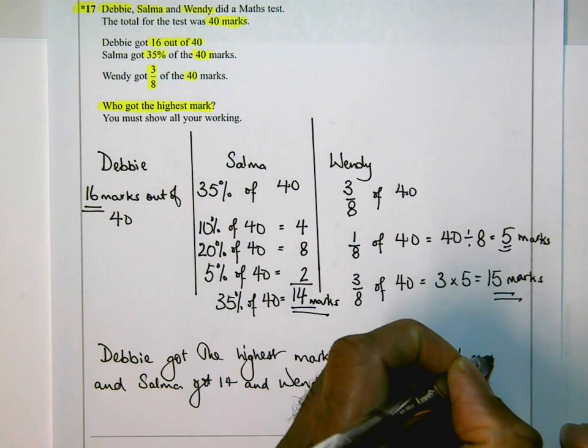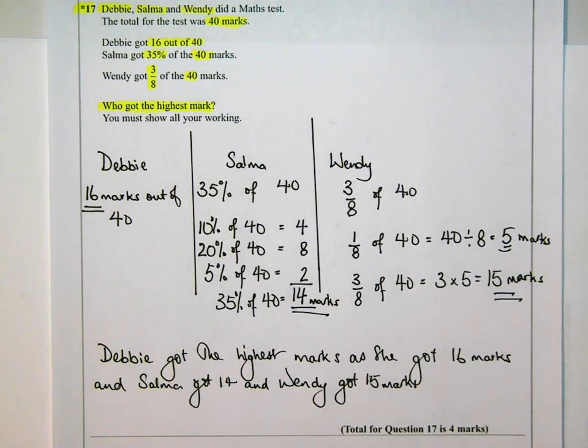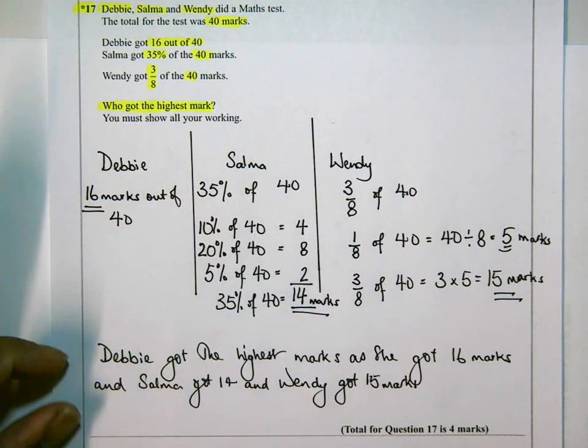There are other ways you could have written this. You could have written, 'Debbie got the highest marks as she got more than Salma and Wendy.' But however you do it, make sure you write a sentence at the end describing the actual answer.